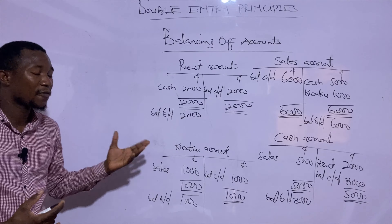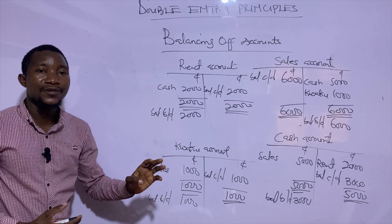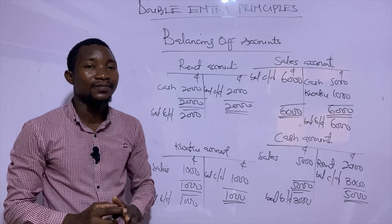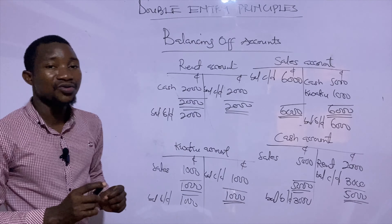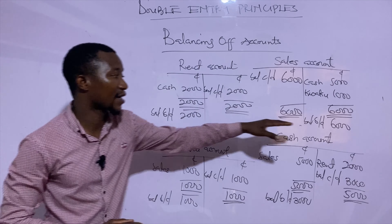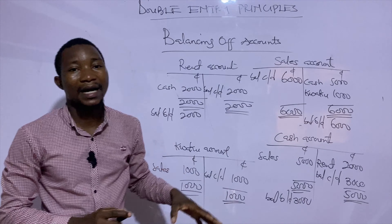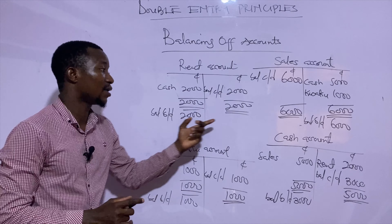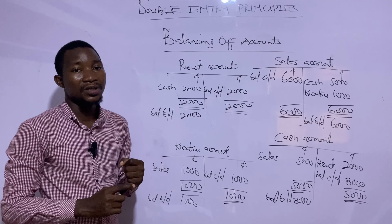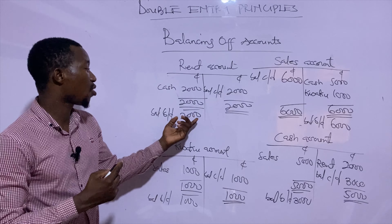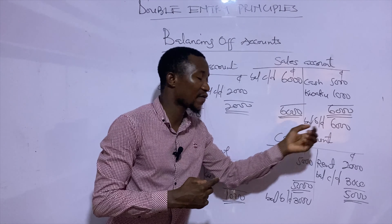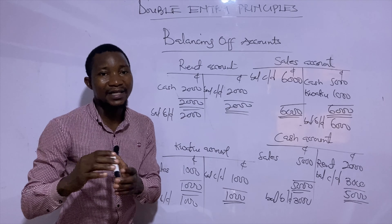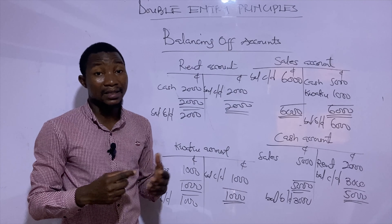After balancing off the accounts, the next step is to prepare what we call a trial balance. A trial balance is a statement prepared to show all the debit balances and credit balances on the accounts at a particular date, to show the arithmetic accuracy of the ledger entries. This statement is prepared to show all debit and credit balances at a particular date in order to help check the arithmetic accuracy of the account balances.